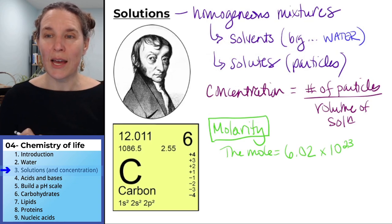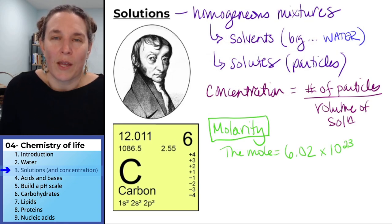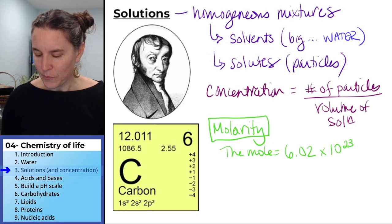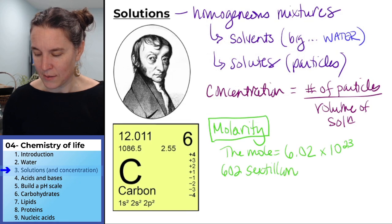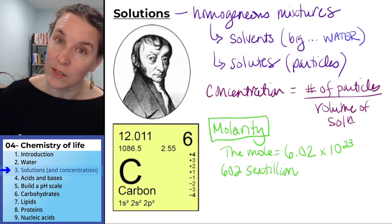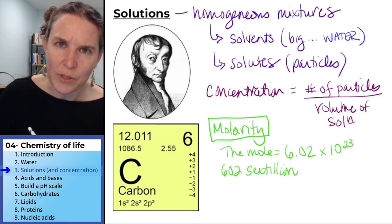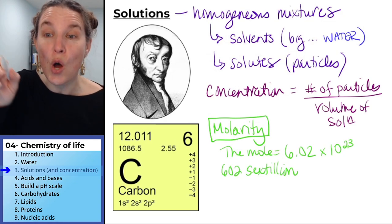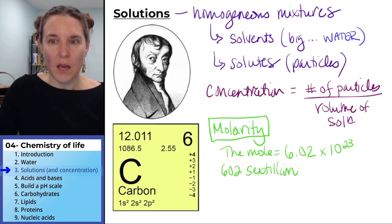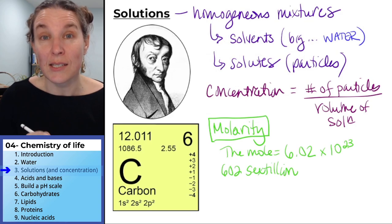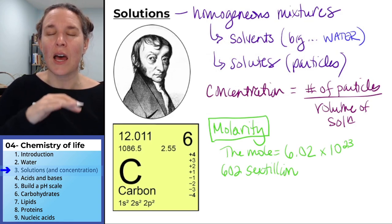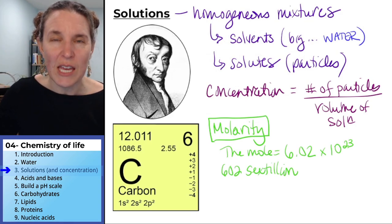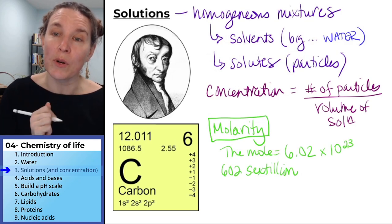If you look at that and you're like, 'what even? Like what? What even is that?' That is 602 sextillion things. Not a million, billion, trillion, quadrillion, quintillion. No, sextillion. 602 sextillion things. That is a massive, incomprehensible number of things.